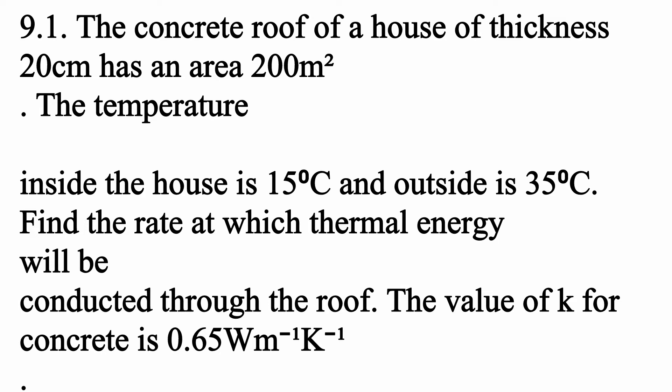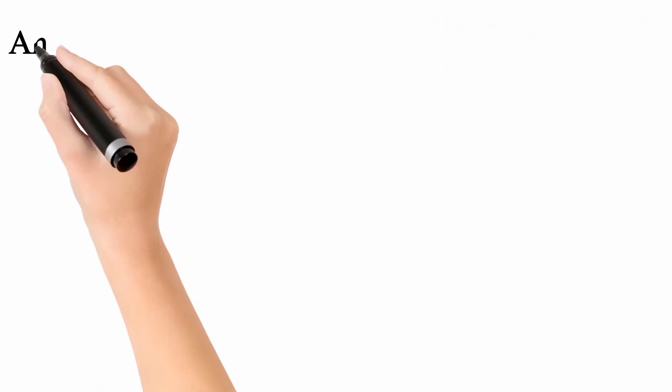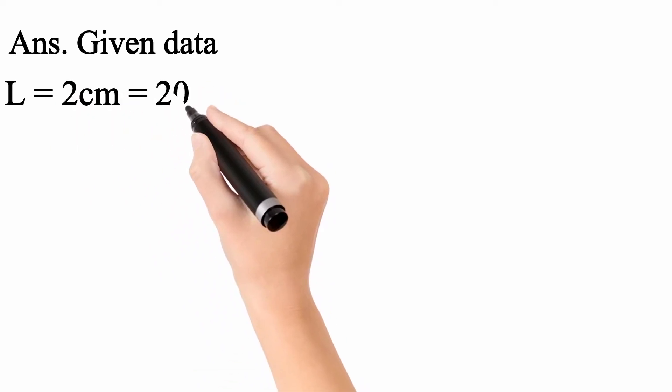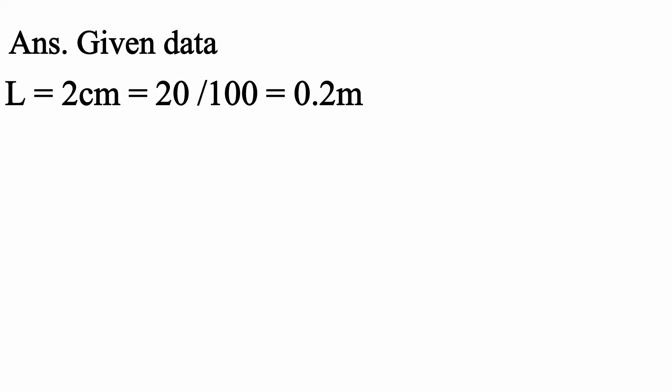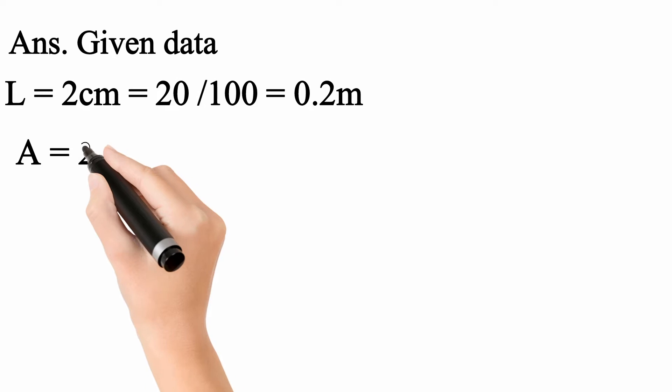यह हमारा पहला numerical है। इसमें given data लिखते हैं — length दी गई है: L = 20 cm। इसको meter में change करेंगे: 20 over 100 = 0.2 meter। तो length हमारे पास आ गई 0.2 meter।